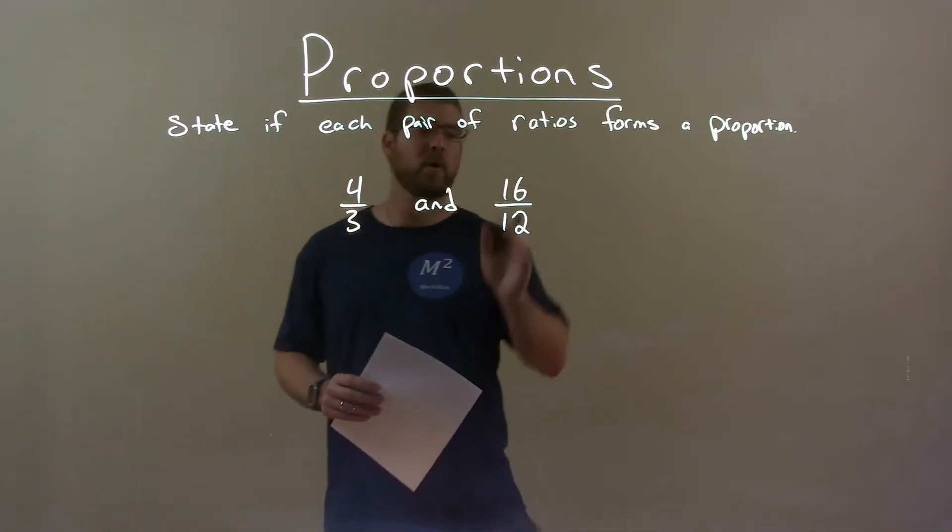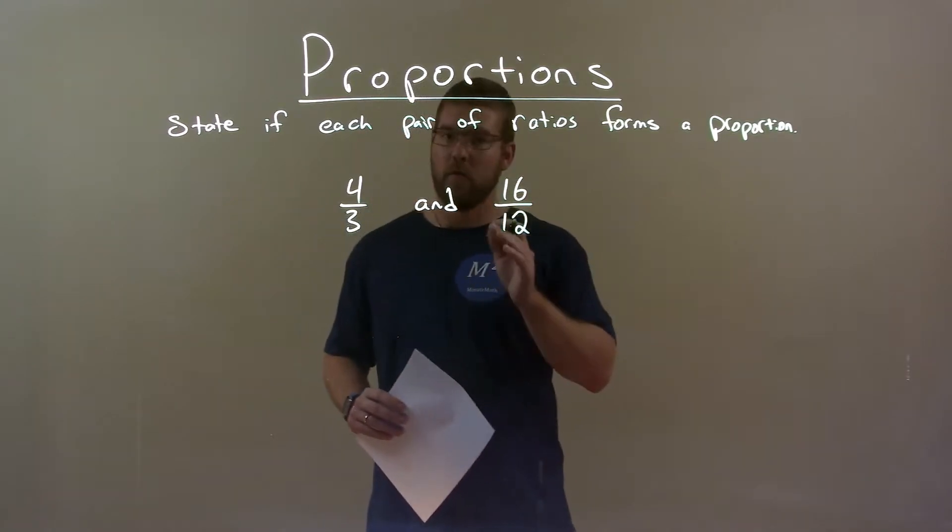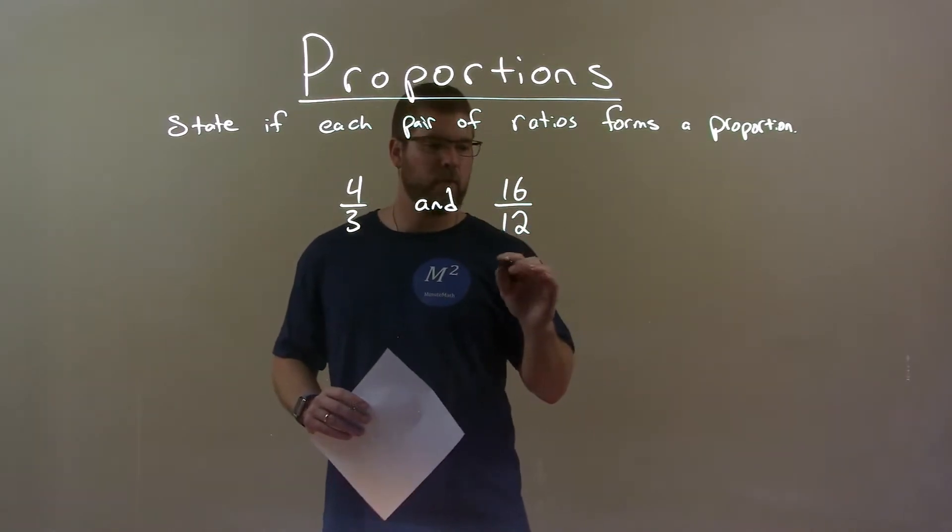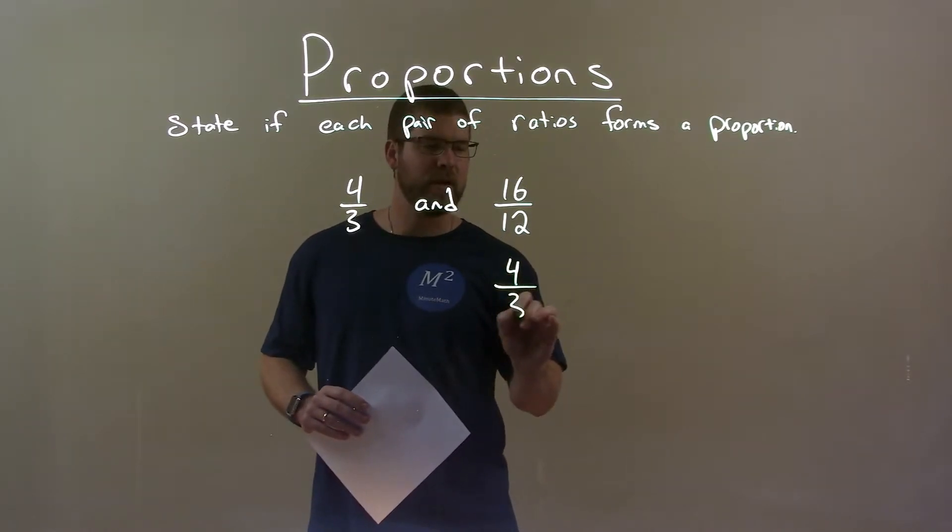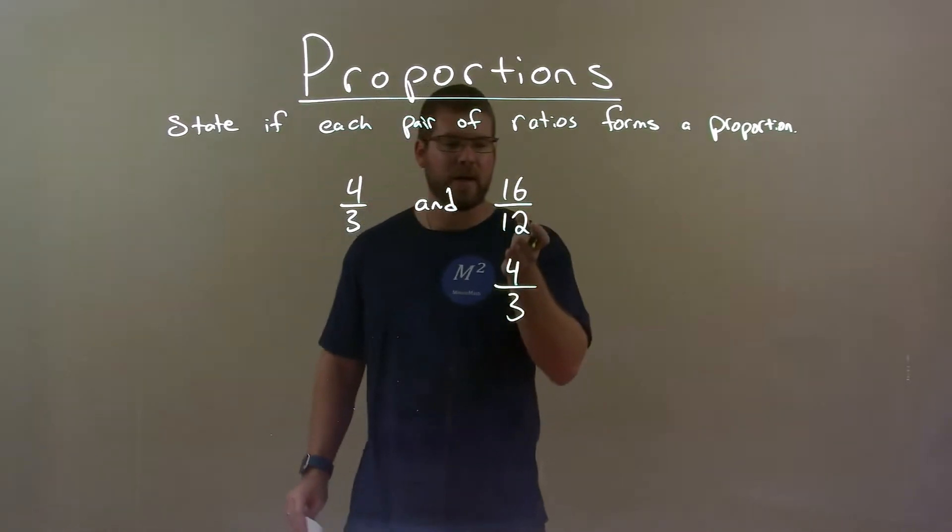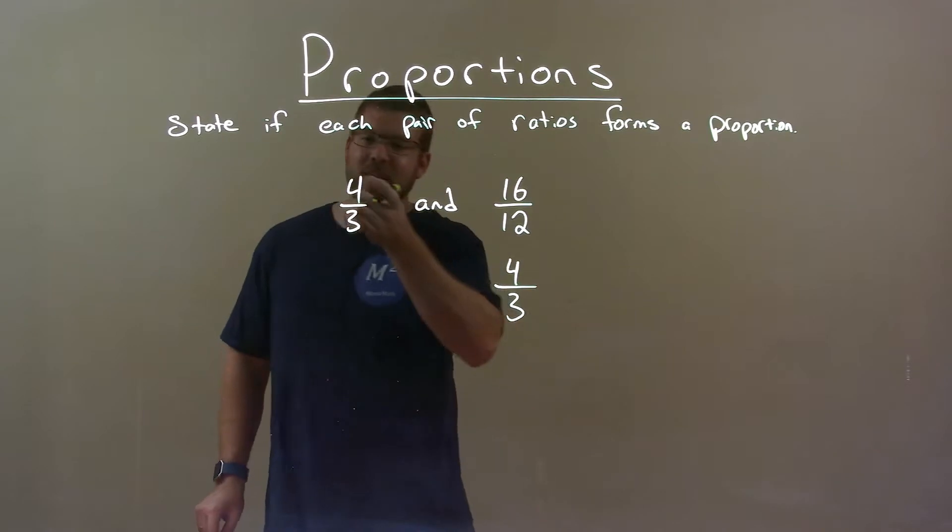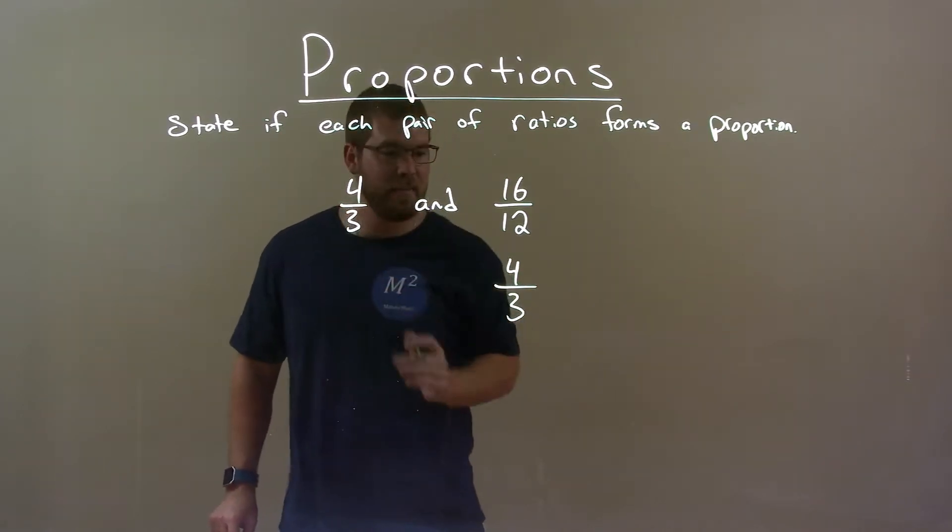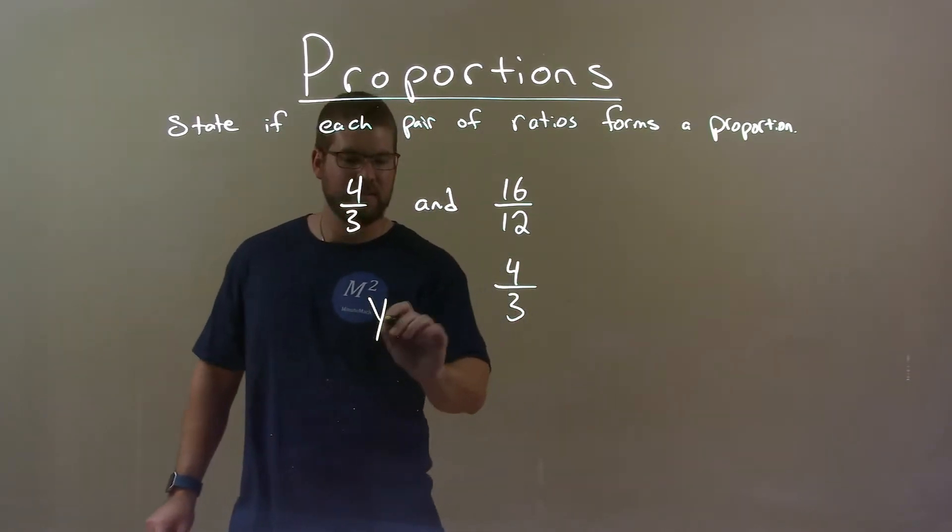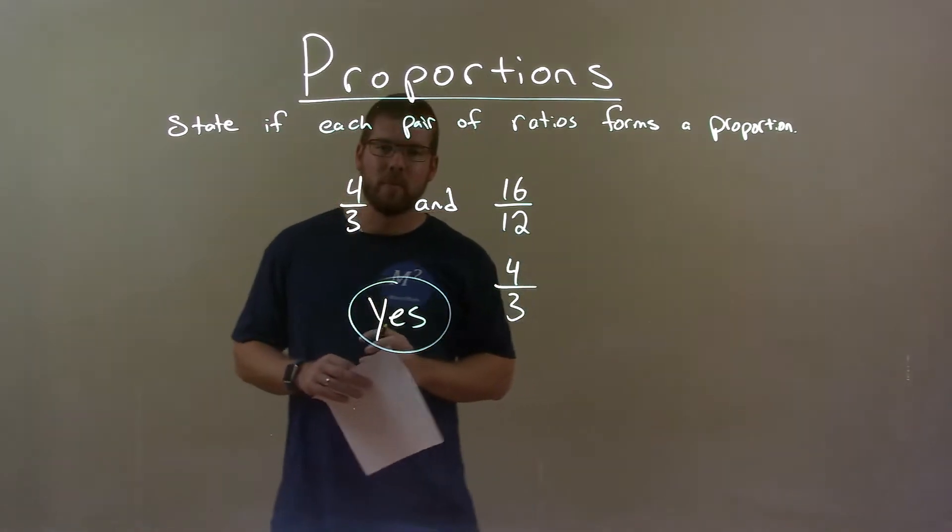16 over 12, well both of those numbers are divisible by 4, right? 16 divided by 4 is 4 and 12 divided by 4 is 3. So, 16 over 12 simplifies to be 4 thirds. Since these are now the same, we can say yes, these ratios form a proportion.